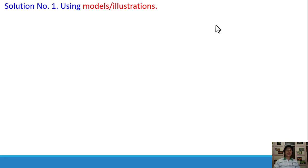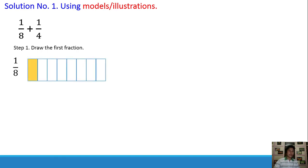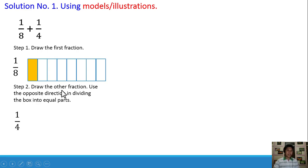Solution number 1: using models or illustrations. We have 1/8 plus 1/4. Step number 1 is draw the first fraction — we have 1/8. Step number 2, draw the other fraction. Use the opposite direction in dividing the box into equal parts.